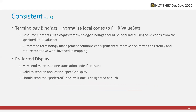Also related to consistency, terminology bindings come back into play, especially in the context of exchanging existing clinical data that needs to be converted to FHIR, or non-FHIR structures that need to be converted to FHIR. Automated terminology management solutions can particularly be useful in improving accuracy and consistency of mappings, and also in reducing the repetitive human workload that is required for doing mapping in some of the more traditional or less automated ways.